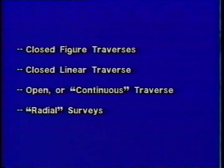In our review of the various purposes of traverses, we noted that each survey must satisfy the specific needs for establishing control in a given project area. Given the specific project requirements, constraints for time, and the availability of personnel and equipment, the surveyor must determine the best type of traverse to accomplish this. The various types of traverses are: the closed figure traverse, the closed linear traverse, the open or continuous traverse, and radial surveys.